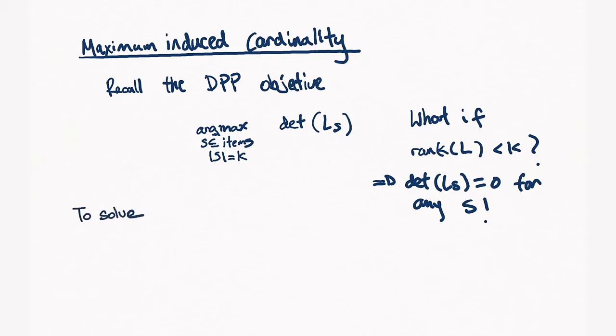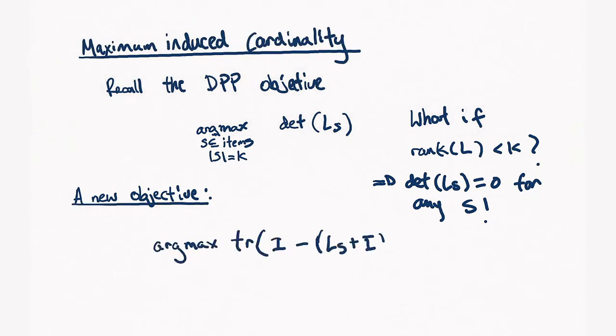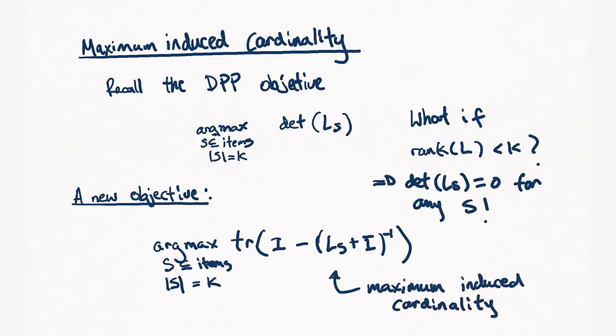To solve this issue, a new objective was introduced by Gillingwater et al. and it's called the maximum induced cardinality objective. The objective is a little bit less simple than the determinant and is this trace of the identity minus some inverse function of L sub S. But the key thing here is even if the matrix L is low rank, this objective is still well defined.